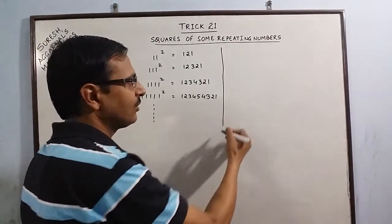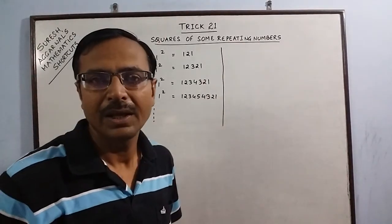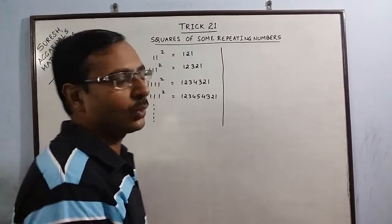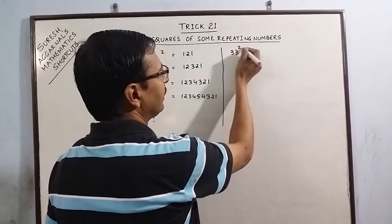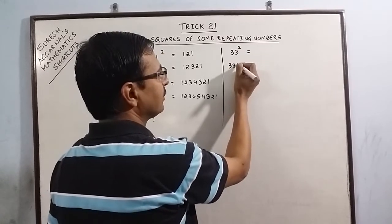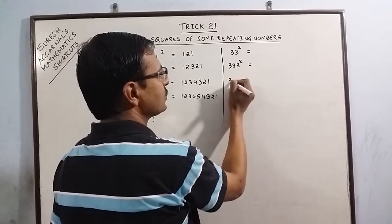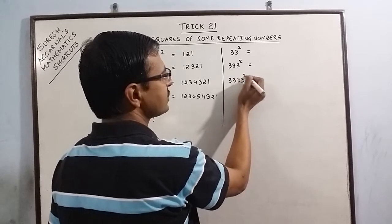Now I will take one more example in which there are repeated 3s. Say we have 33 square, 333 square, 3333 square and so on.